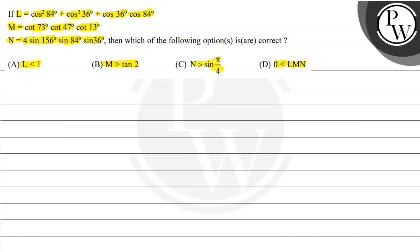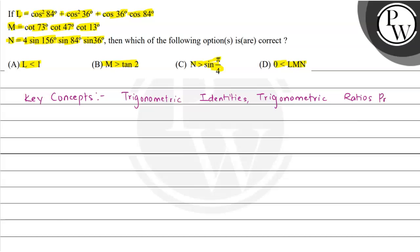We'll start this problem by listing the key concepts which we will use. The key concepts involved are trigonometric identities, trigonometric ratio properties, and some basic inequality ideas. Using these three concepts we'll be solving this problem.